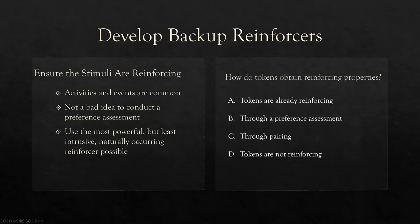Now we need to develop backup reinforcers. Tokens don't mean anything without good backup reinforcers. We're talking about a menu of backup reinforcers — ideally three, four, or five of different value for the client to pick. Ensure the stimuli are actually reinforcing; if the backup reinforcers are not reinforcing, the tokens won't be either. Activities and events are extremely common — escaping a task to use the computer, going outside for ten minutes, eating lunch with friends, getting on an iPad.